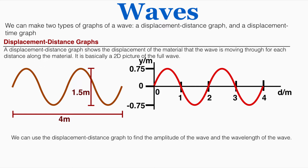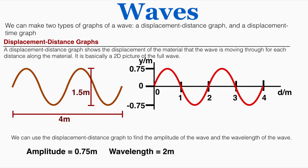We can use the displacement-distance graph to find the amplitude and the wavelength of the wave. The amplitude is 0.75 meters — that's how far it is from the zero point — and the wavelength is 2 meters because one full repetition of the wave covers 2 meters.